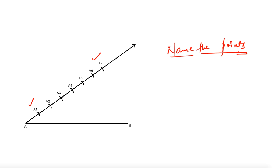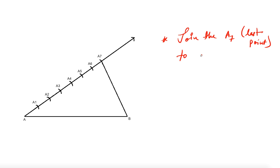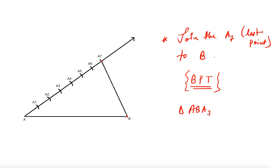After that, join the seventh point A7 to point B and you will get a straight line. This forms a triangle — the name of the triangle is triangle A-B-A7. Now you can figure out where this construction is taking us.